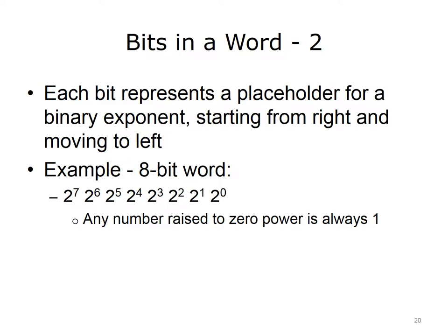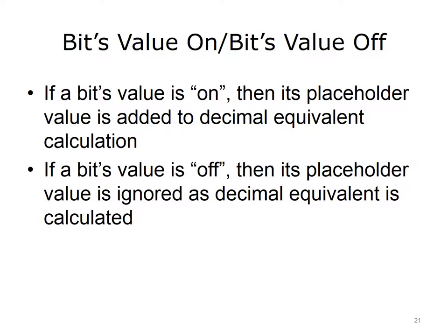In an 8-bit word, placeholder values starting from the left are: 2 to the 7th power (128), 2 to the 6th power (64), 2 to the 5th power (32), and so on, all the way to 2 raised to the 0 power. Any number raised to the 0 power is always the decimal value of 1. If a bit's value is on, or set to the binary state of 1, then its placeholder value is added to the decimal equivalent calculation. If a bit's value is off, or set to the binary state of 0, then its placeholder value is ignored as the decimal equivalent is calculated.